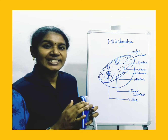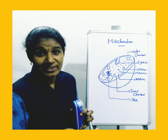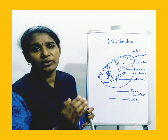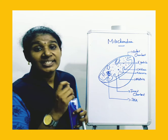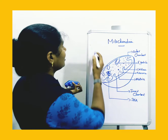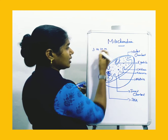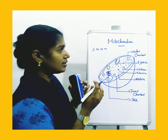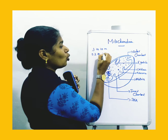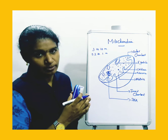Mitochondria can be of different size and shape — even rod-like structure, oval, or round. The size is variable. The length ranges from 3 to 10 microns, while the width ranges from 0.2 to 1 micron.